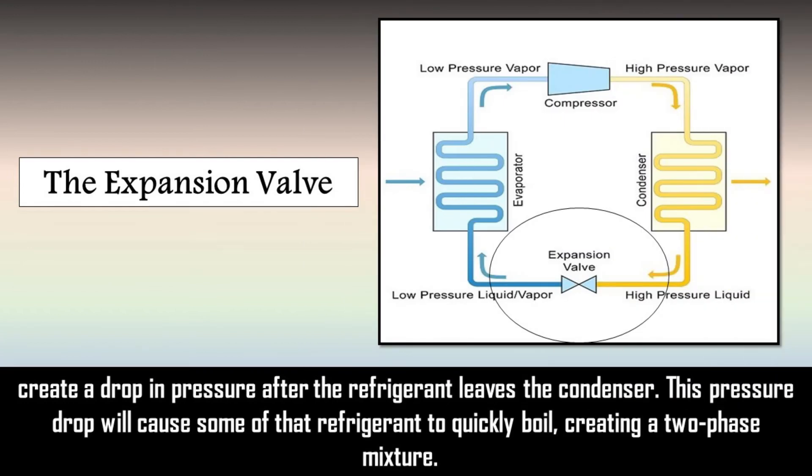Next in line is the expansion valve. This creates a drop in pressure after the refrigerant leaves the condenser. This pressure drop will cause some of the refrigerant to quickly boil, creating a two-phase mixture.